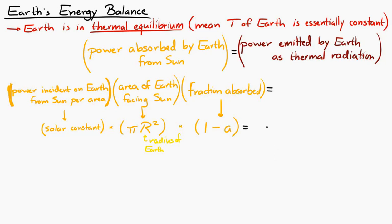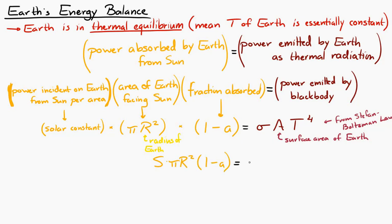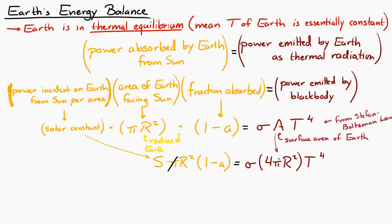That has to equal the power emitted by the Earth. The Earth is approximately a black body, so we can write σAT⁴ using the Stefan-Boltzmann law, where A is the total surface area of the Earth — 4πr² — because the entire surface is emitting radiation, and T is the temperature of the Earth's surface. Substituting and simplifying, the π's and r's cancel out, leaving us with: solar constant times (1 minus albedo) equals 4σT⁴.